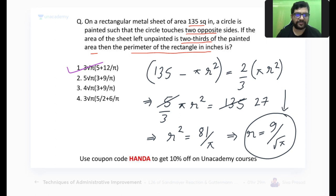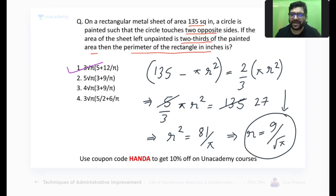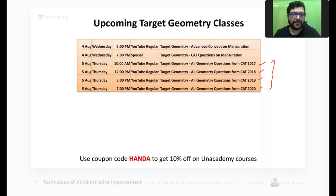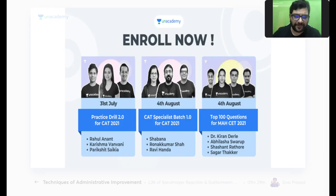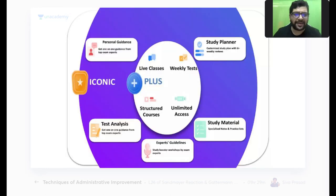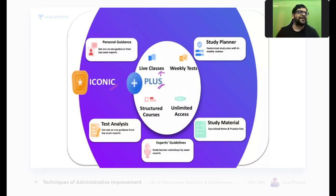Komal, if you want to start from basics, this is probably not the best class for you since we are discussing a previous year paper. My recommendation would be to join a batch starting from basics. One of my batches starts on the 4th of August covering Data Interpretation from scratch. There are two types of courses on Unacademy: a Plus course with live structured classes, and an Iconic course with personalized one-on-one mentorship by top B-school graduates.